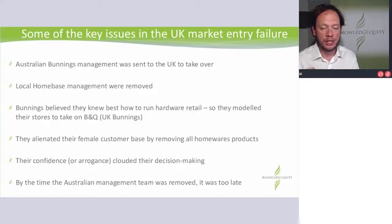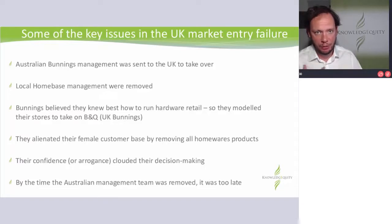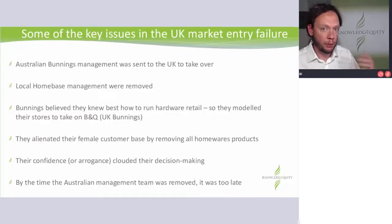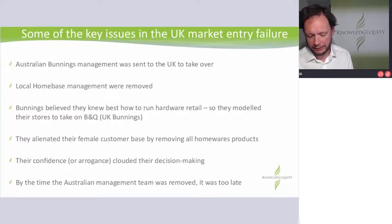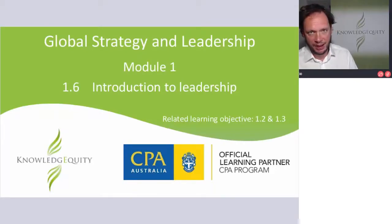They changed the stores, changed the SKUs — the items available to purchase — and they alienated one customer group that went there to spend money. By the time things really weren't working, they did remove the Australian management team and put in a person who had been senior exec or CEO of B&Q, but it was all too late. So you can get strategy wrong. There are some smart people in Wesfarmers and the Bunnings group, but they got this very wrong.